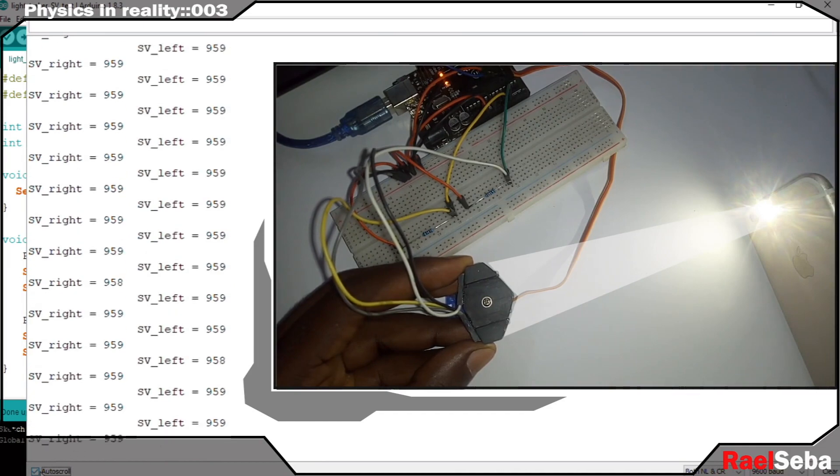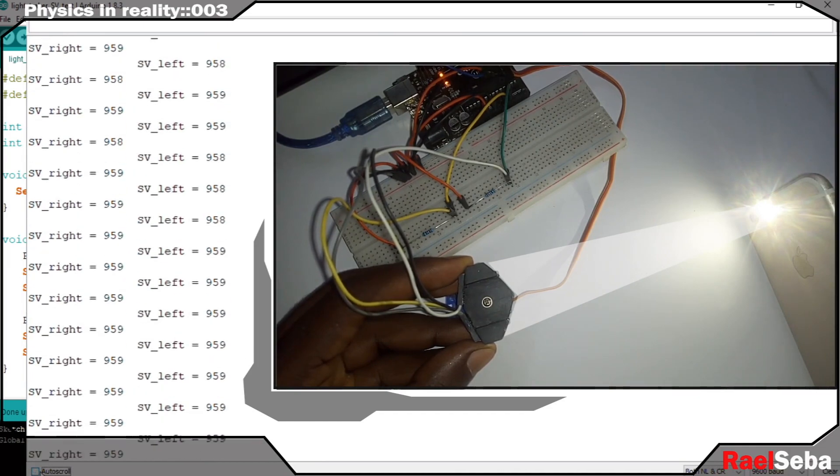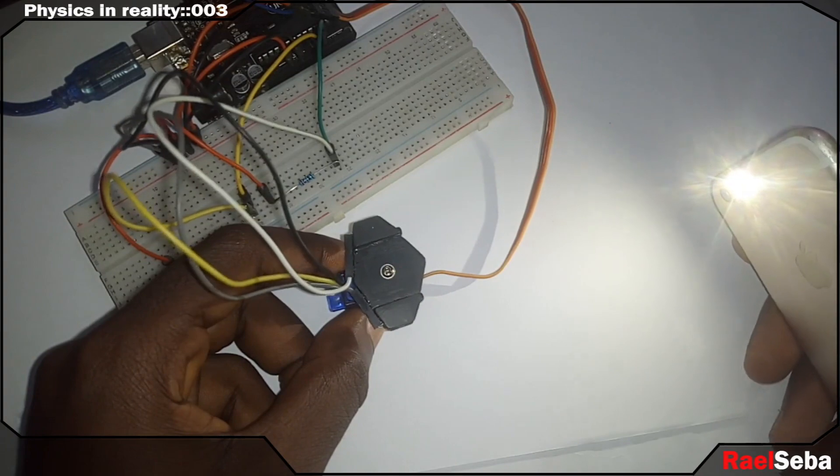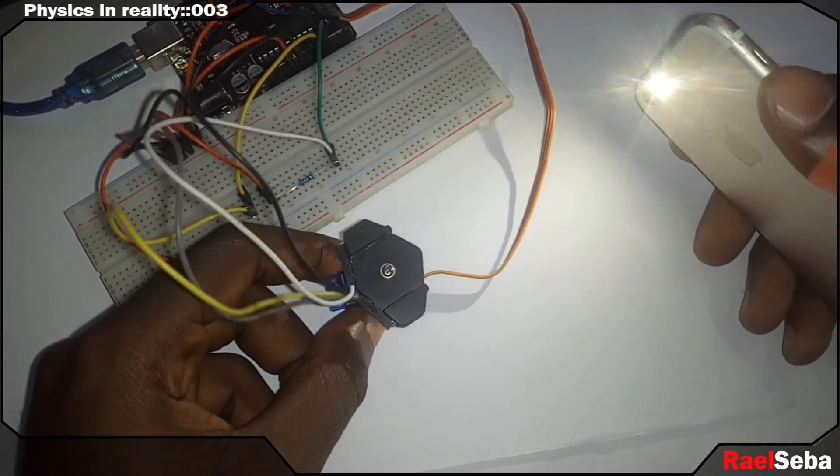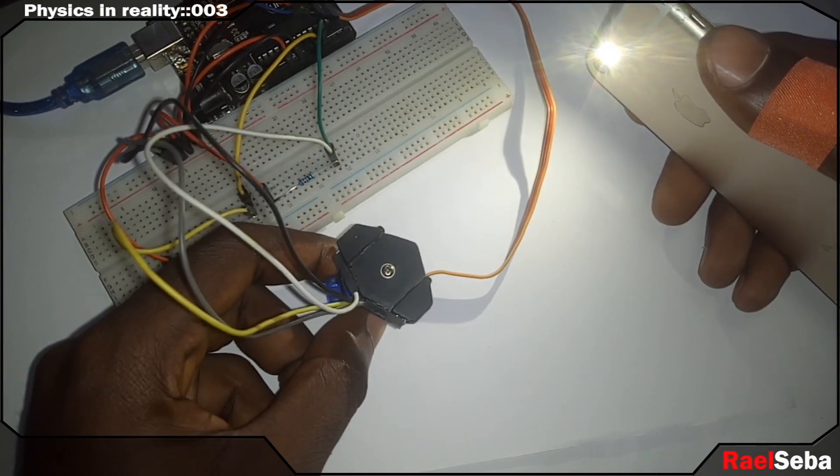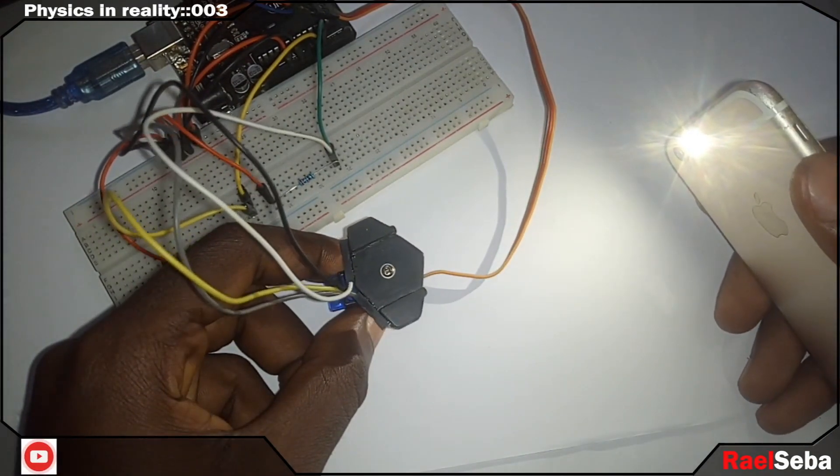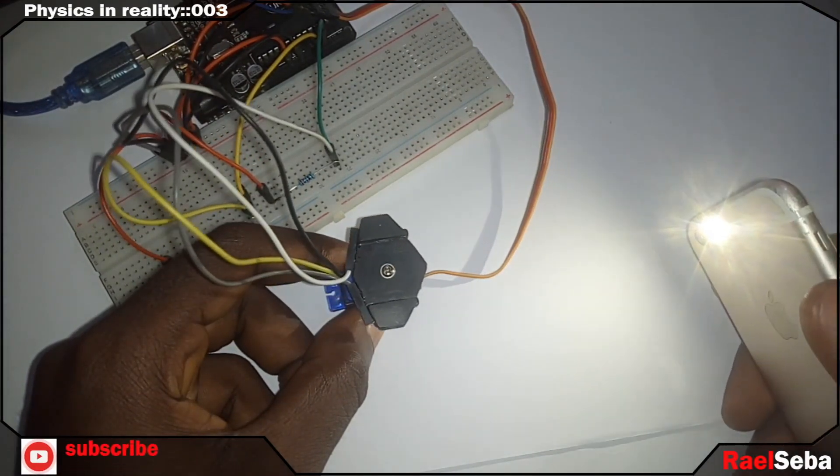But the servo motor movement is not that accurate to move from where it was and position itself at the perfect angle for the light intensity to equally hit the photoresistor, which results in different sensor values. So trying to get that perfect angle makes it not to be stable.